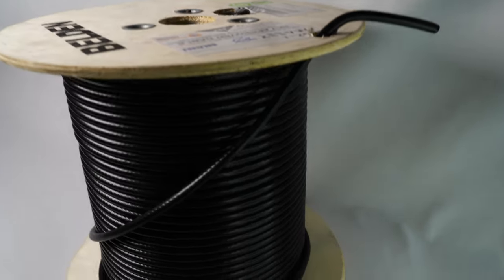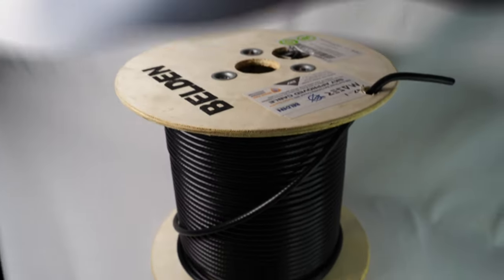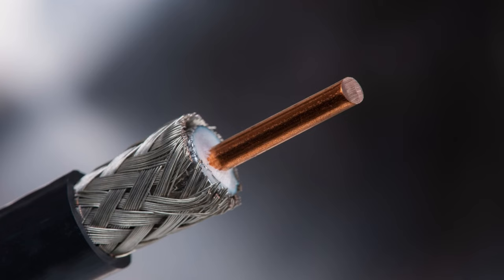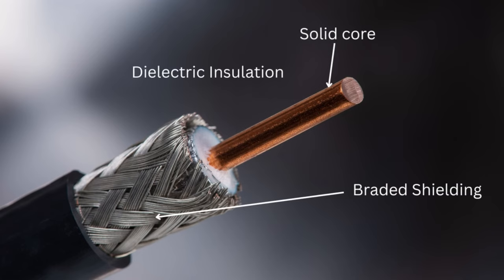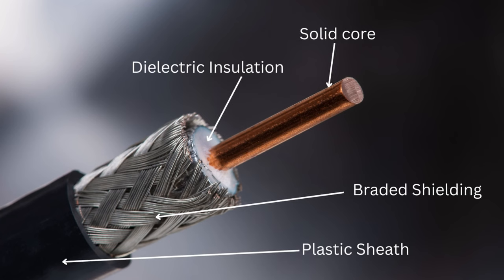RG6 coaxial cables have four distinct parts. In the center of this particular cable is a solid copper covered steel conductor. The solid conductor is separated from the woven metallic braid shielding by a white dielectric insulator. Protecting these materials is a black plastic outer jacket that is rated for use both indoors and outdoors.